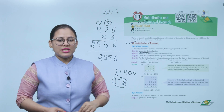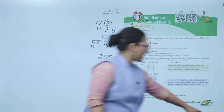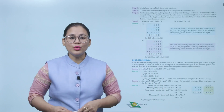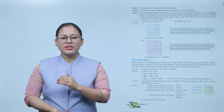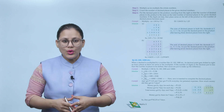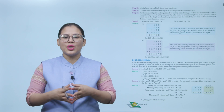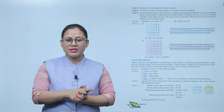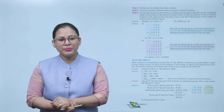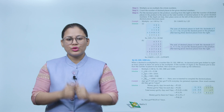Now, to multiply a decimal by another decimal, the following steps are followed. Step 1: ignore the decimal point. Step 2: multiply as we multiply whole numbers. Step 3: count the number of decimal places in both given decimal numbers. Step 4: put the decimal point in the product counting from the right so that the number of decimal places in the product equals the total number of decimal places in the given decimals. If the digits are fewer, place zeros on the left of the product.